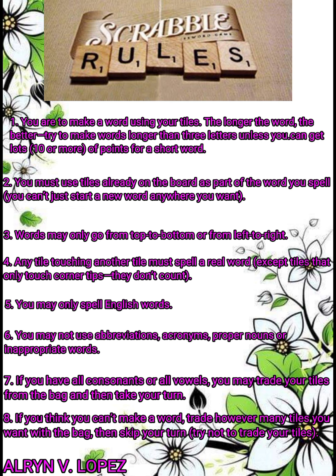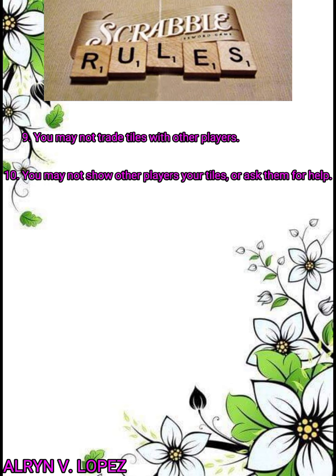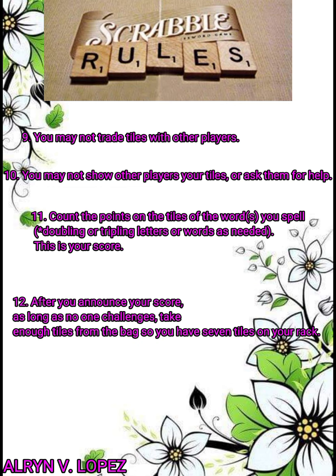Rule number nine: you may not trade tiles with other players. Number ten: you may not show other players your tiles or ask them for help. Number eleven: count the points on the tiles of the word you spell, doubling or tripling letters or a word as needed. This is your score. Number twelve: after you announce your score, as long as no one challenges, take enough tiles from the bag so you have seven tiles on your rack.